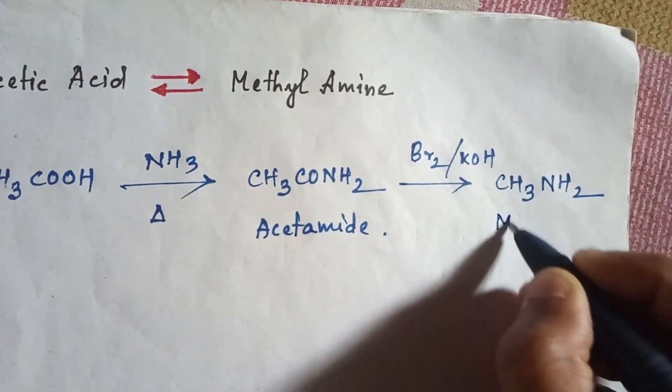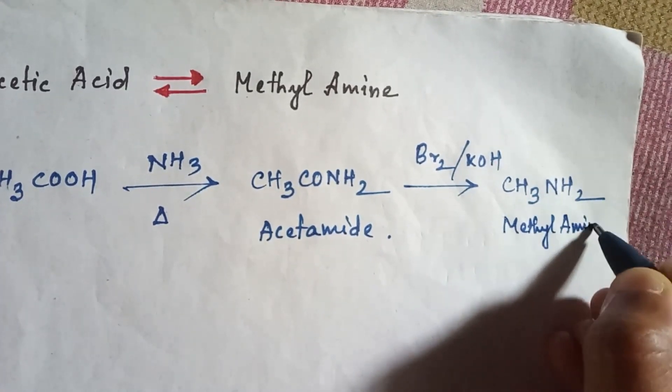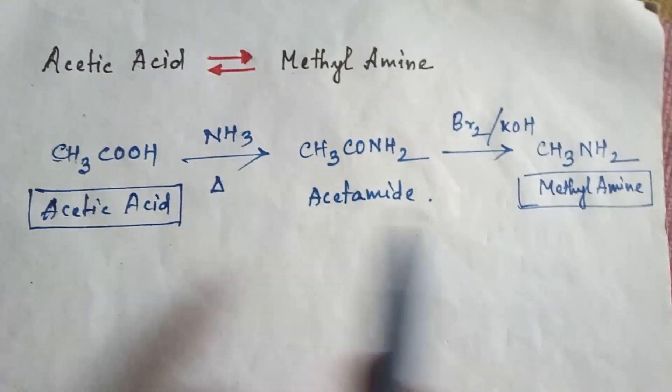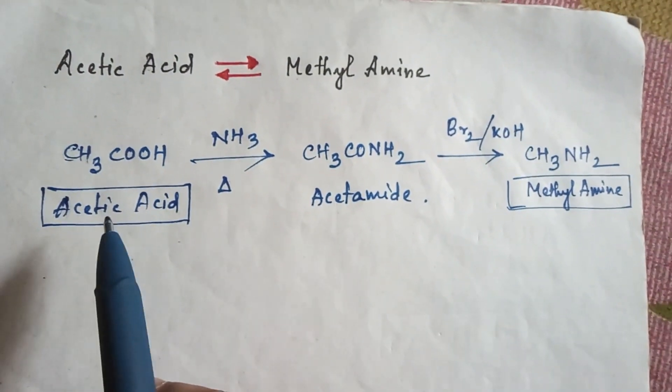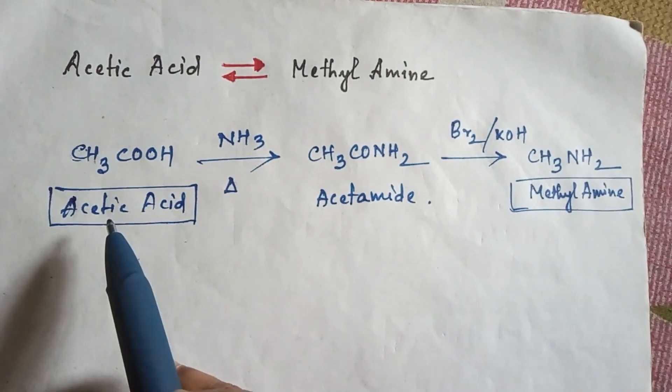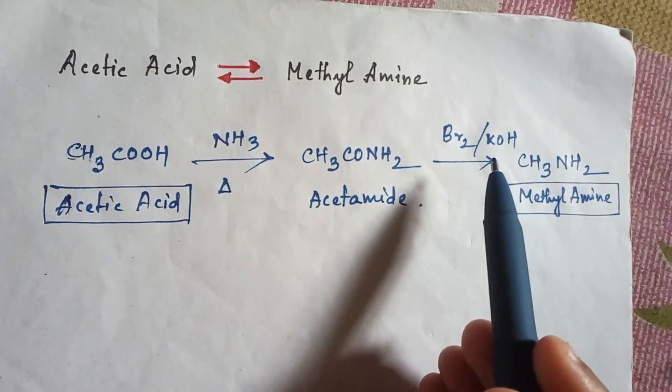So from acetic acid to methyl amine it is a two-step process. In the first step you just convert the acid into amide, and in the next step you just add bromine and KOH as a reagent and you will easily get from amide to amine.